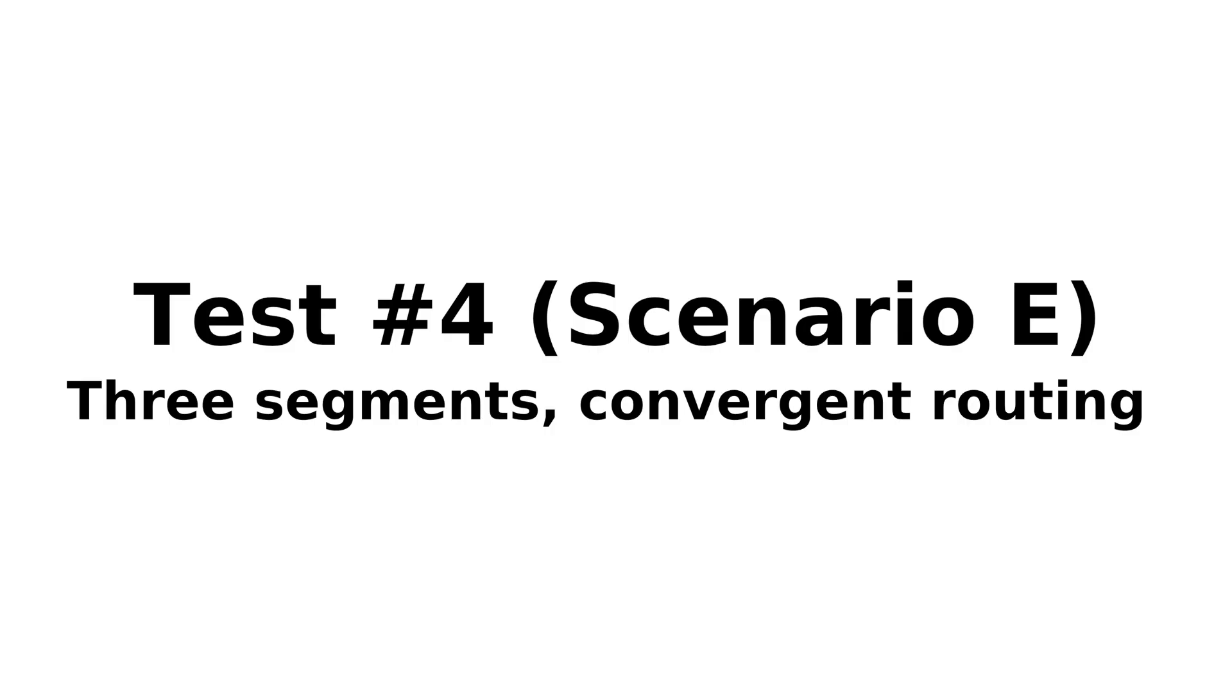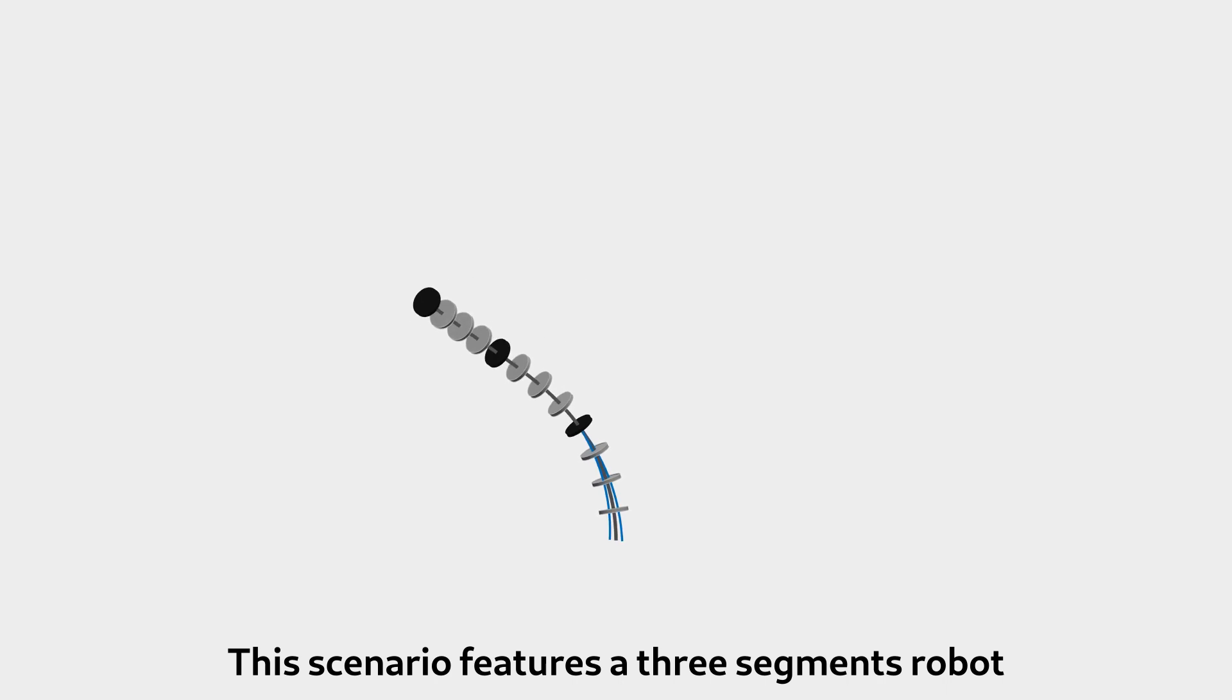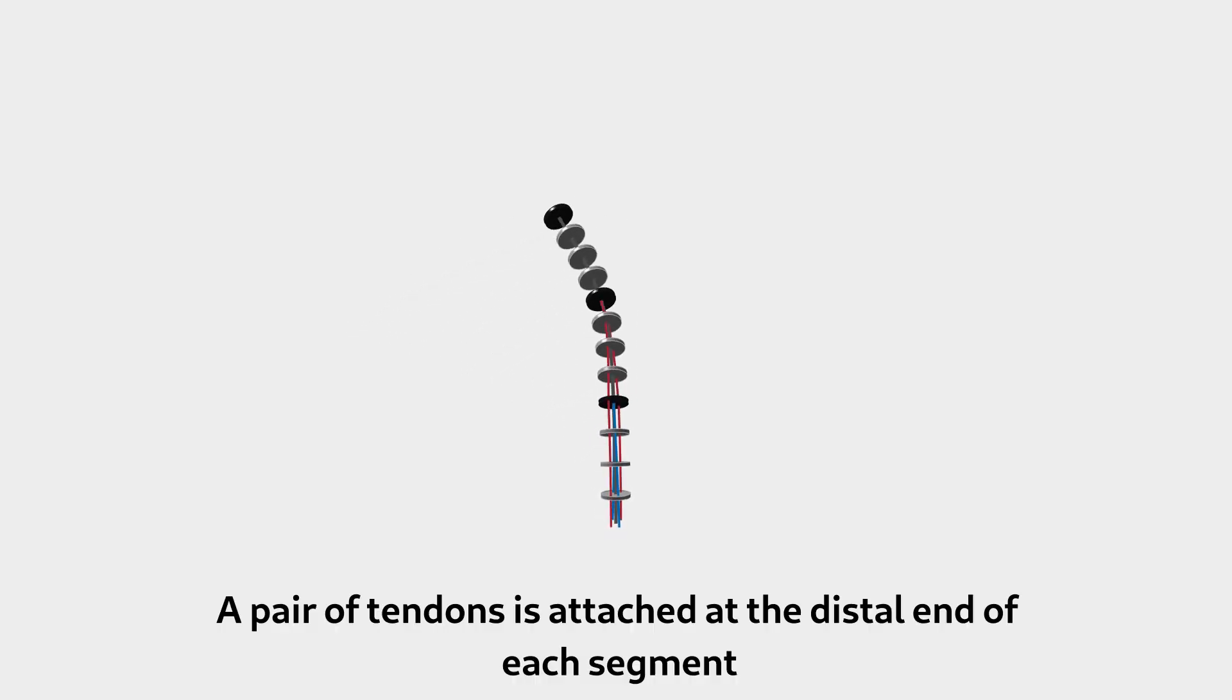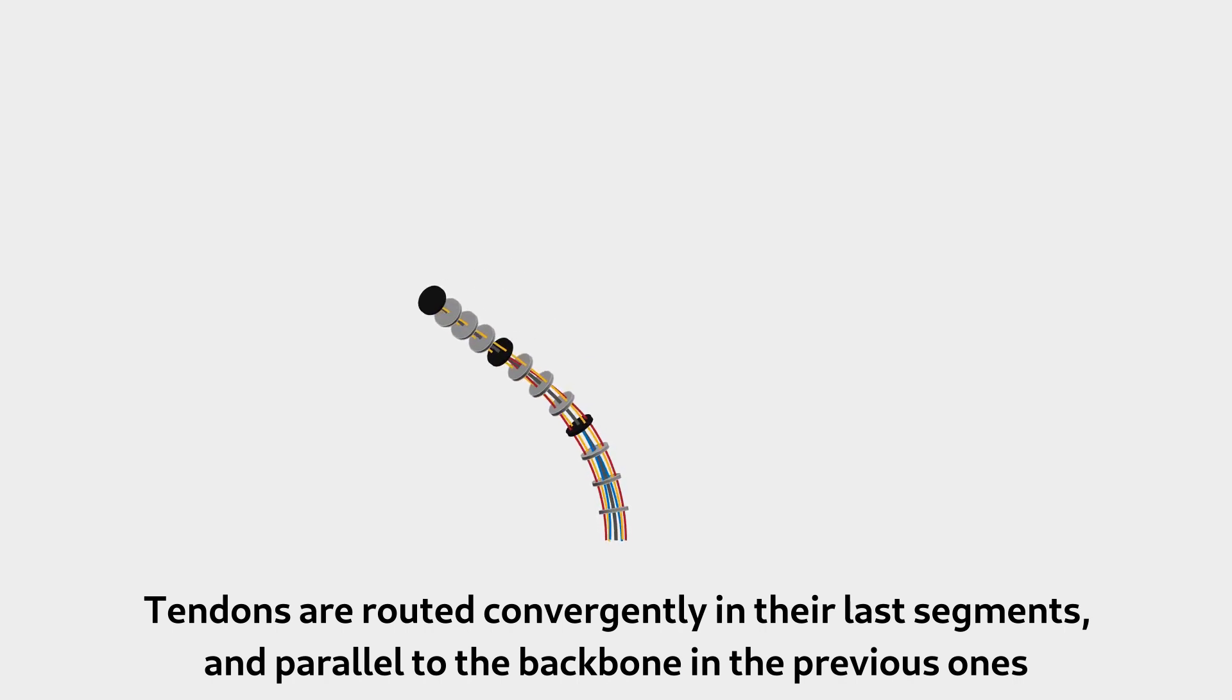Test 4, Scenario E: This scenario features a three-segment robot. A pair of tendons is attached at the distal end of each segment. Tendons are routed convergently in their last segments, and parallel to the backbone in the previous ones.